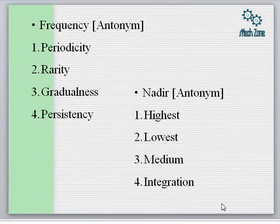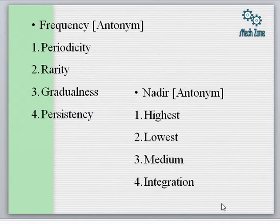Now we come to another important question which has been asked in GATE — we have to find out the antonym of the word 'nadir.' Nadir is a word used for the lowest point in any scenario. The antonym of nadir is 'zenith,' which represents the highest peak or the highest point. Zenith also means a meeting of high or top officials. Summit, zenith, and apex are all synonyms.